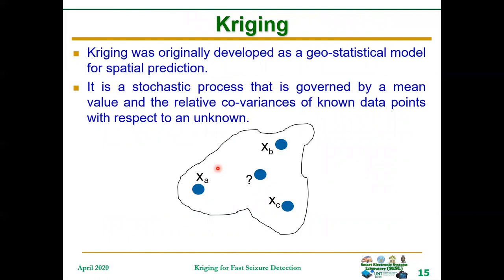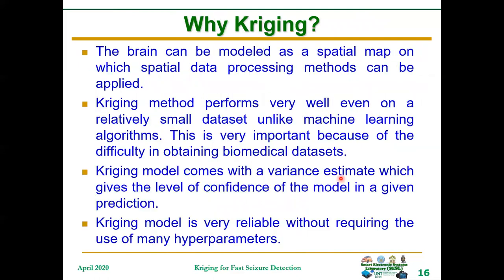Kriging. In Kriging methods, you can estimate the value at an unknown location given some known locations. For example, if you look at this figure, we have three locations where values are known — xa, xb, xc — and then we have a central location with an unknown value. In this region, it is possible to estimate the value at this unknown location, and that process is what is called Kriging. The brain can be modeled as a spatial map on which spatial data processing methods can be applied.